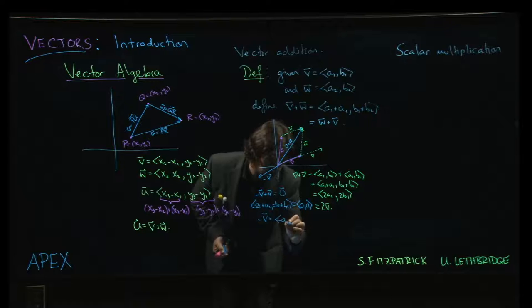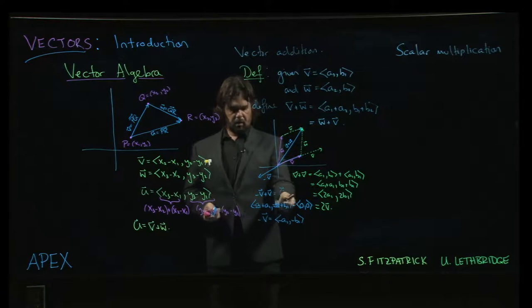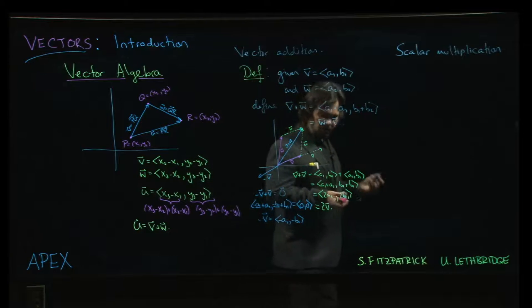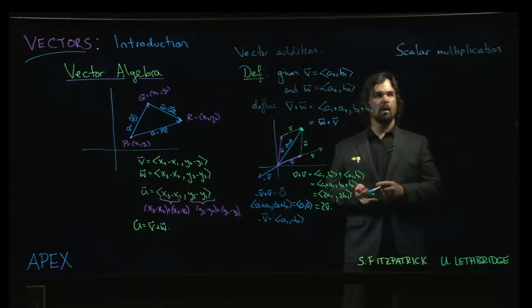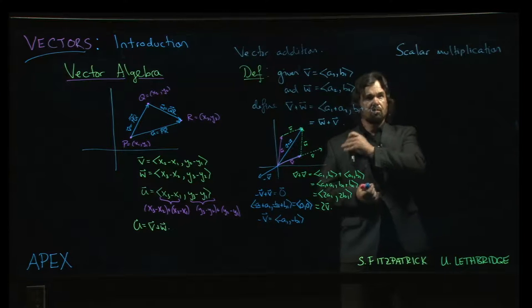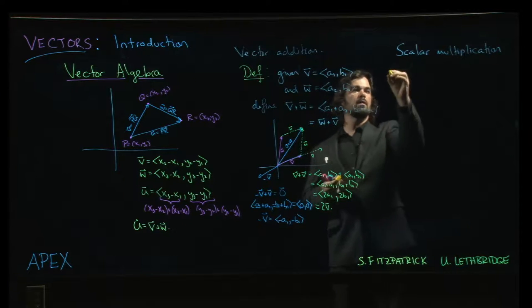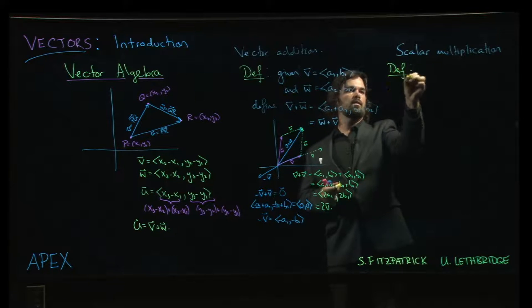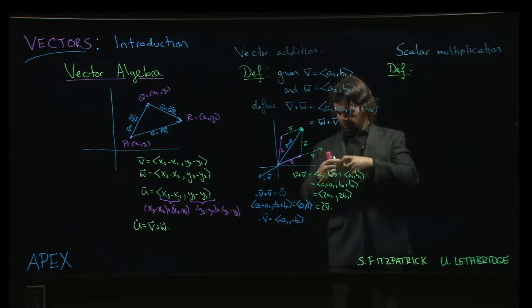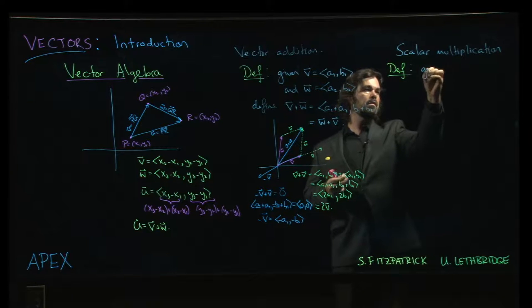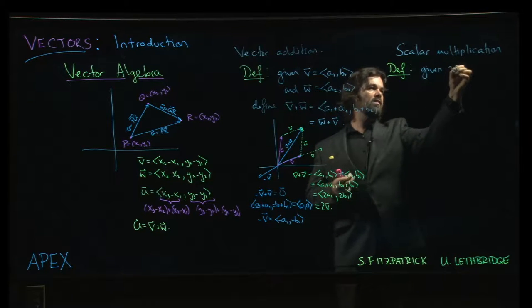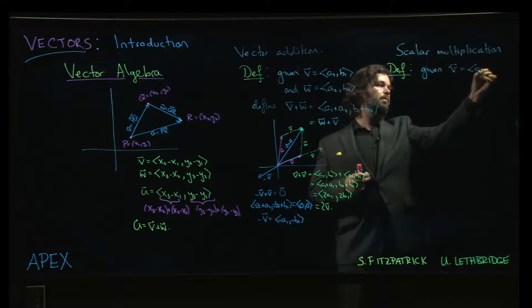So minus v would have to be (-a1, -b1). That's like -1 times a1 and -1 times b1. So playing around with these examples forces you into the following definition. This time you're going to be given a vector v, let's call it (a, b).